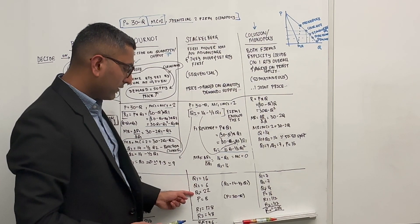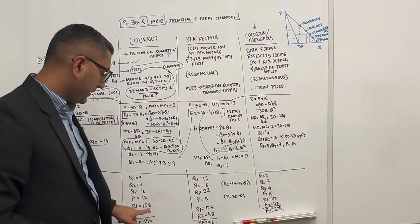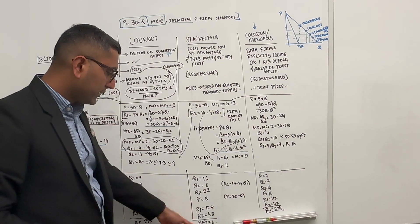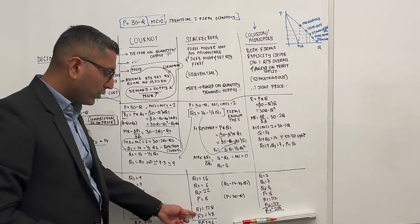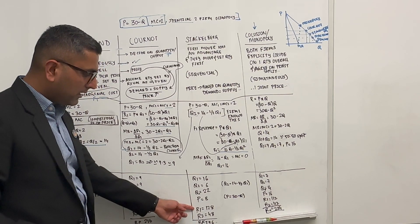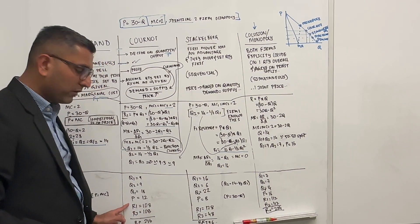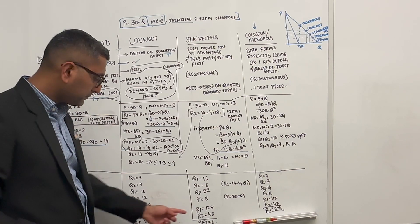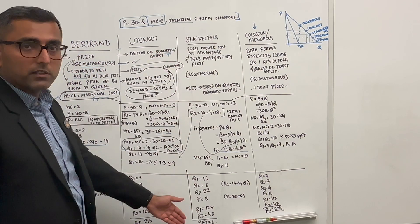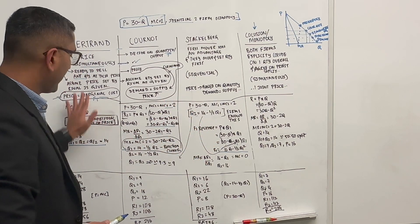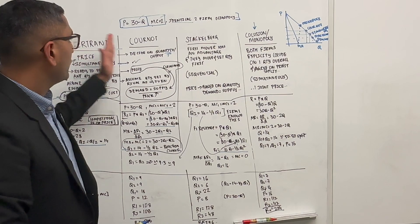In Stackelberg, total quantity is 22, price is slightly lower compared to Cournot, and total profits are slightly lower than pure Cournot where both act simultaneously. However, firm 1's share of total revenue is much higher here compared to Cournot. So although total revenue is lower, firm 1 was able to take significant advantage of firm 2 through the first-mover position. Firm 1's revenue improved from Bertrand to Cournot to Stackelberg: from 28 to 108 to 128 units.